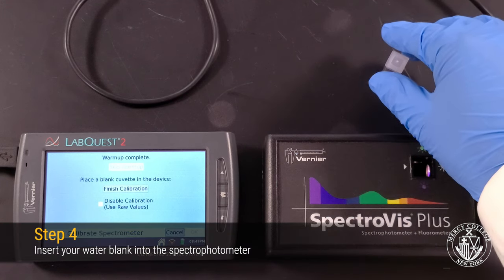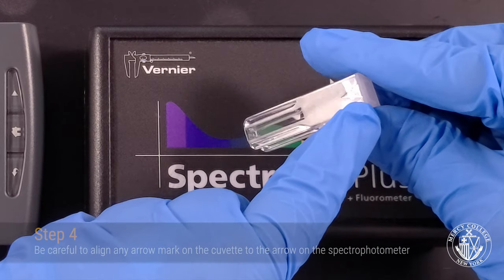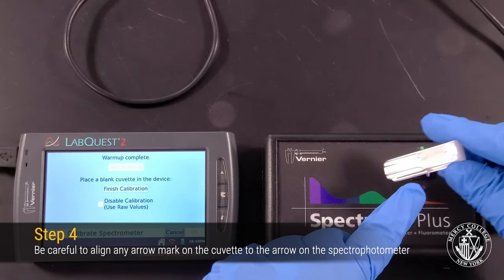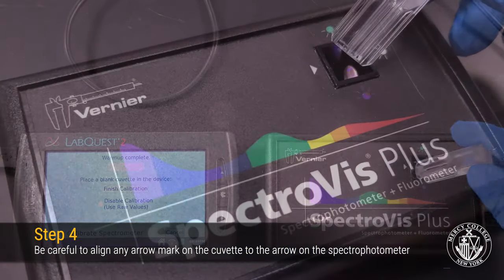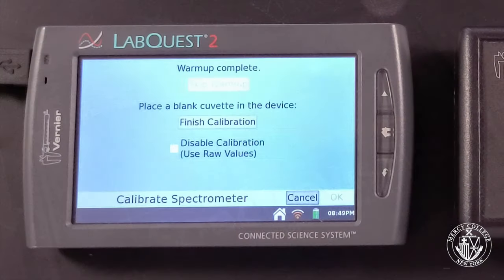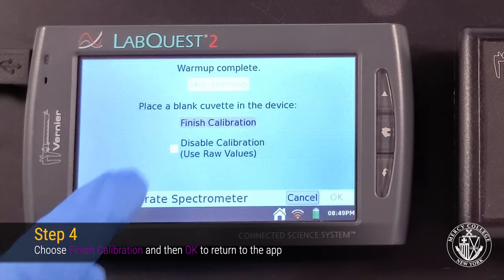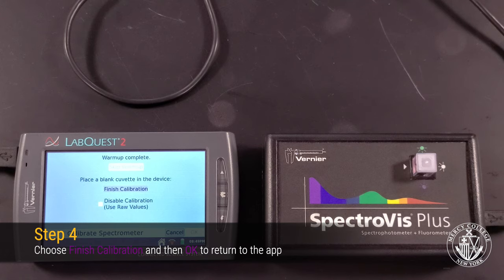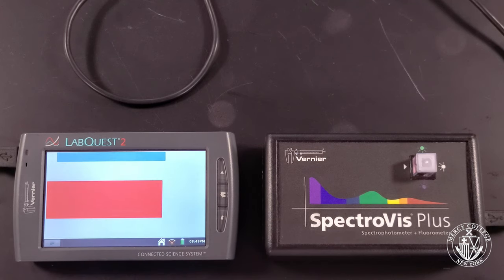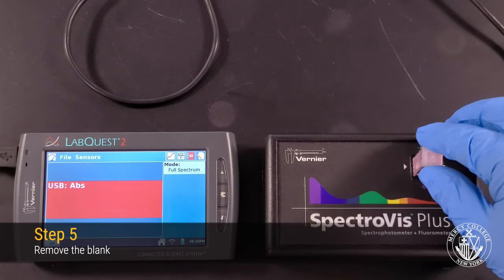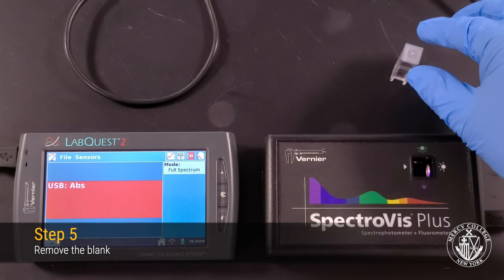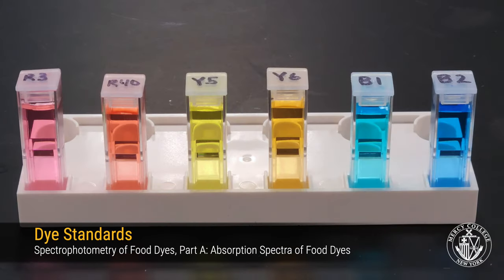To finish the calibration, insert your blank sample into the spectrophotometer, making sure that the arrow on the cuvette lines up with the arrow on the spectrophotometer. Now select Finish Calibration and then OK in order to complete the calibration of the spectrophotometer. Then remove the blank sample from your spectrophotometer. You're now ready to analyze your six dye standards.